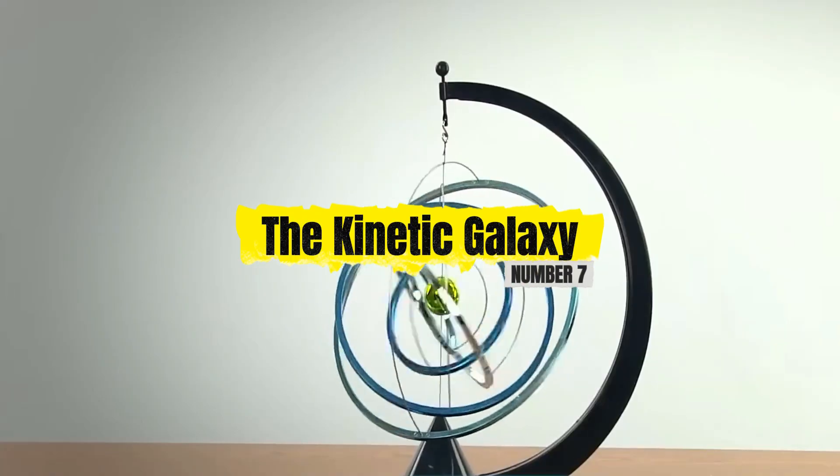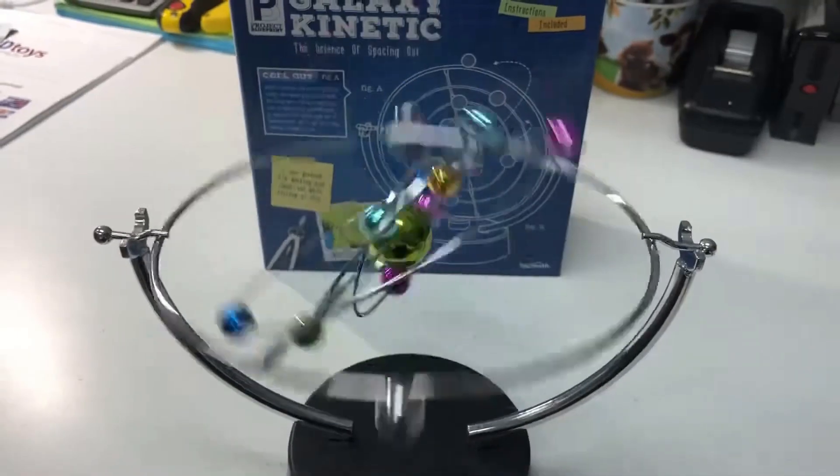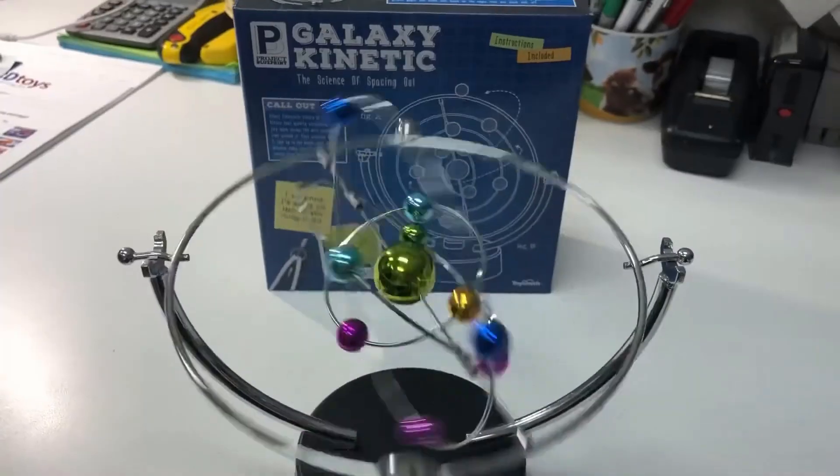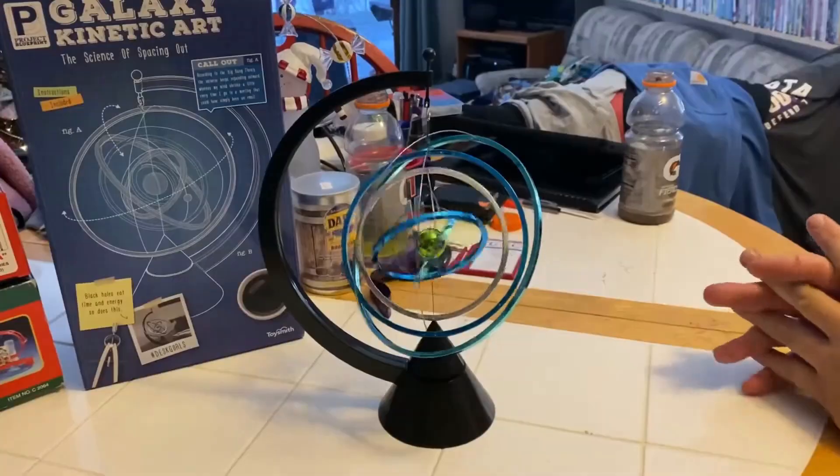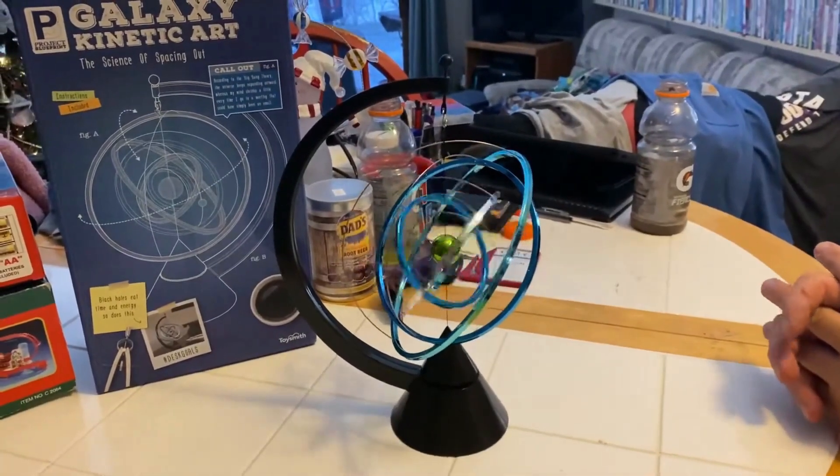Number 7. The Kinetic Galaxy. Ever wanted to hold the entire orbital motion of a planet system right on your desk? The kinetic galaxy, often called the asteroid, creates that illusion with perpetual, graceful motion.